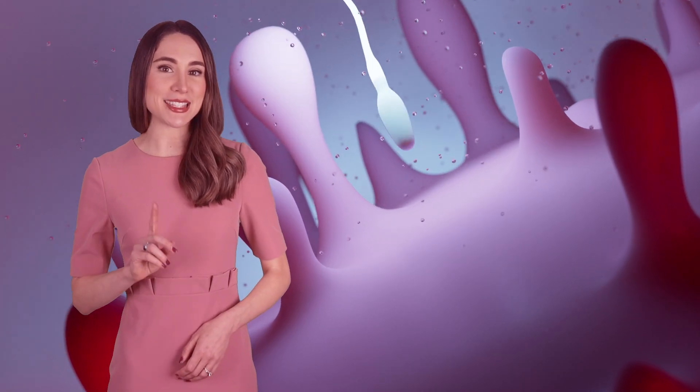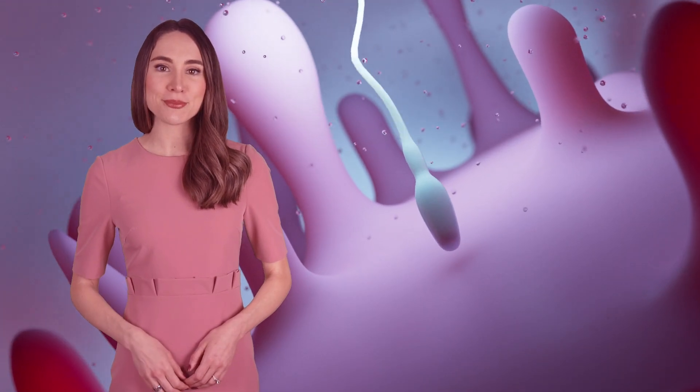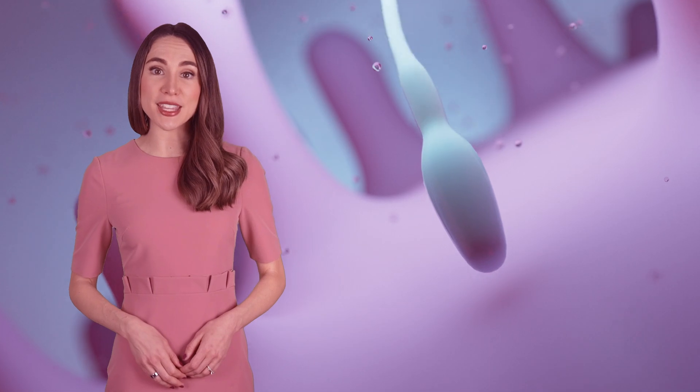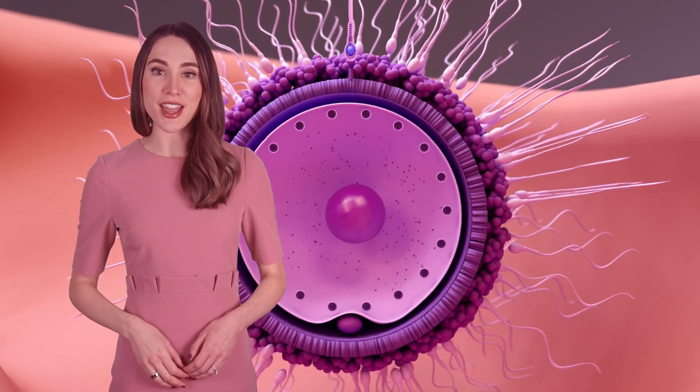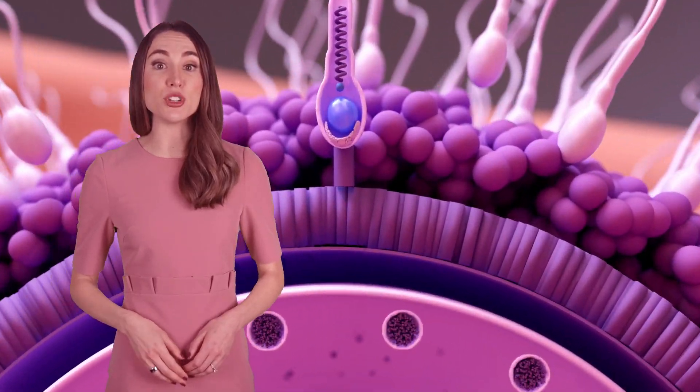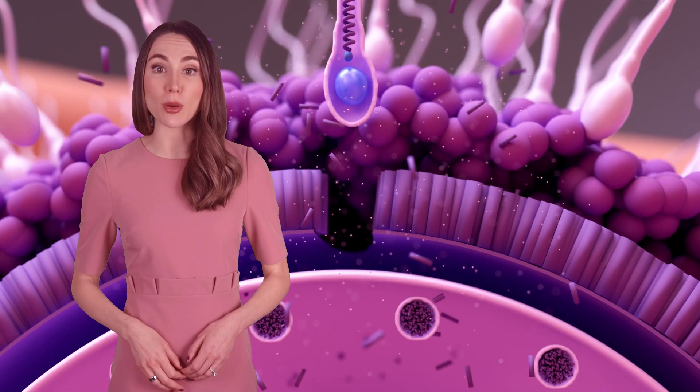Eventually, a single sperm reaches the egg. By this point, only a few dozen sperm out of the initial 300 million have endured the entire voyage. The sperm must reach the outer layer of the egg, known as the zona pellucida, which acts as a barrier preventing multiple sperm from entering and ensuring normal fertilization.